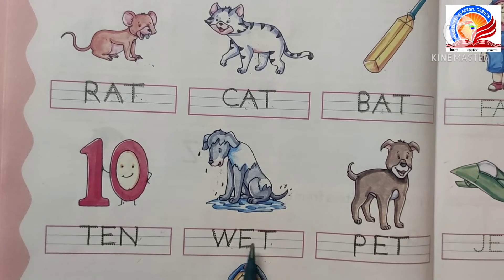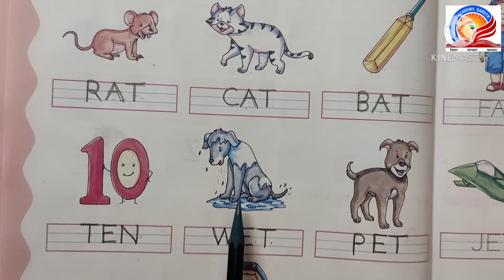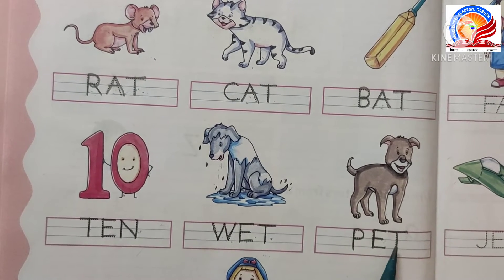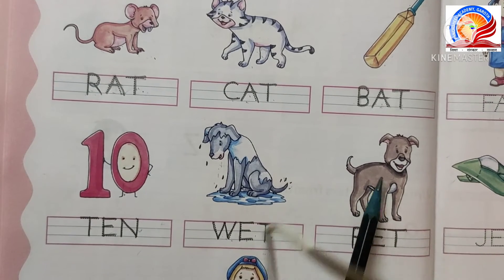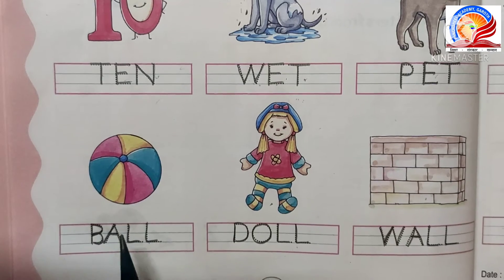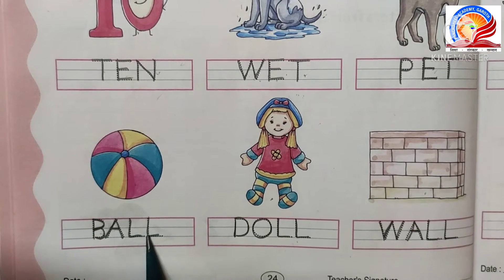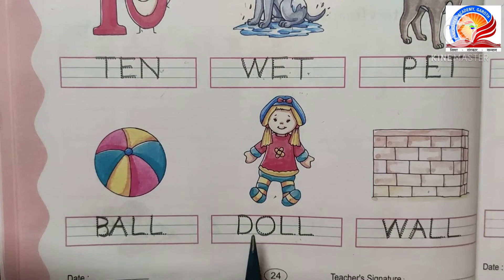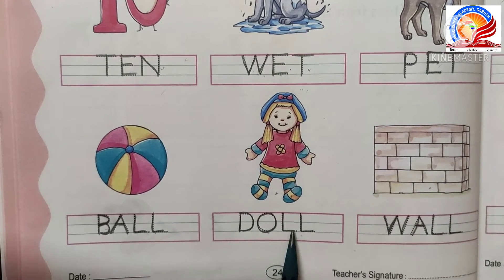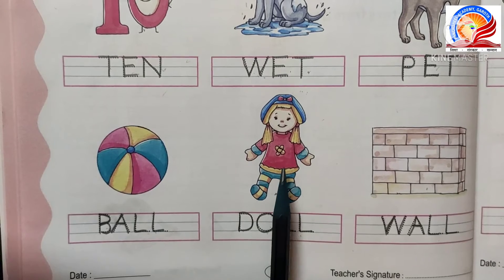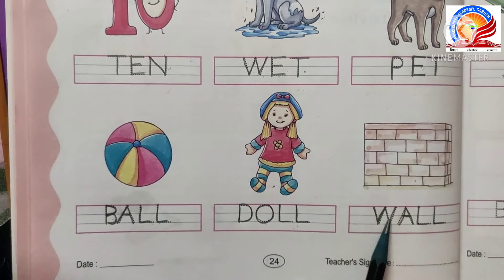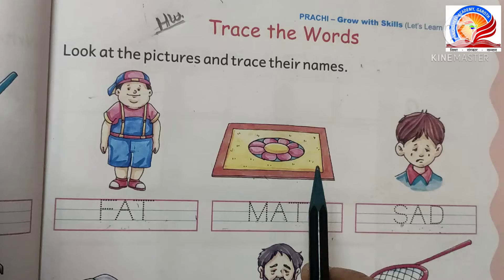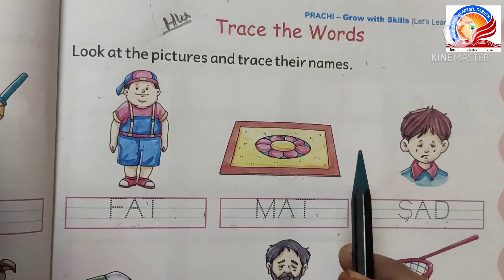W, E, T — Wet. Wet means भीगना। P, E, T — Pet. Pet means पालतू। B, A, L — Ball. Ball means गेंद। D, O, L — Doll. Doll means गुड़िया। W, A, L — Wall. Wall means दीवार। अब देखते हैं हम page number 25।